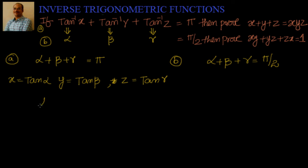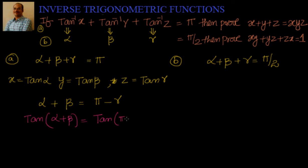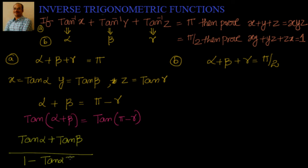I can write alpha plus beta plus gamma equal to pi as alpha plus beta equal to pi minus gamma. It is just simple manipulation. Now, if I apply tan on both sides: tan of alpha plus beta equal to tan of pi minus gamma. What is this? Tan alpha plus tan beta by 1 minus tan alpha tan beta — we know the formula. This is tan of alpha plus beta.